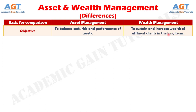In a nutshell, asset management is all about the management of funds, wherein the asset managers take well-timed decisions as to the investments to be made, held or sold. On the other hand, wealth management is concerned with offering a wide range of solutions to the client, to help the client in generating maximum returns out of the amount invested. These are the differences between asset management and wealth management.